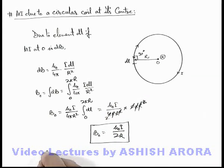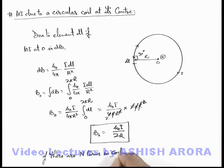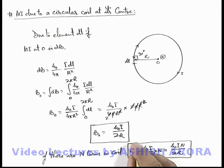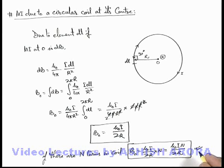And we can say if there are N turns in coil, this magnetic induction at point O we can write as μ₀i/2r multiplied by N, which can be written as μ₀iN/2r. That is a magnetic induction due to N turns of the coil. So be careful about the result that is going to be used in many different applications.